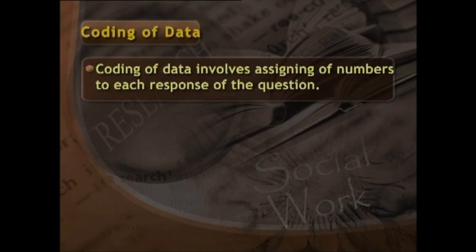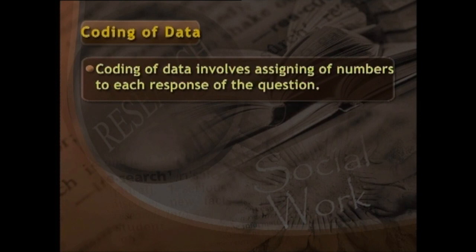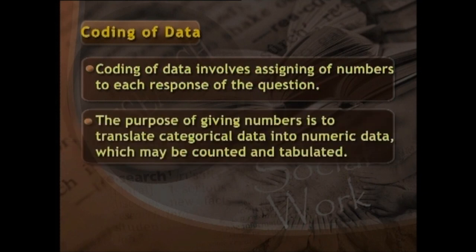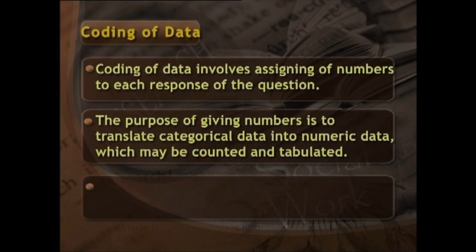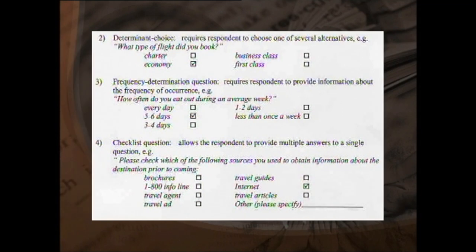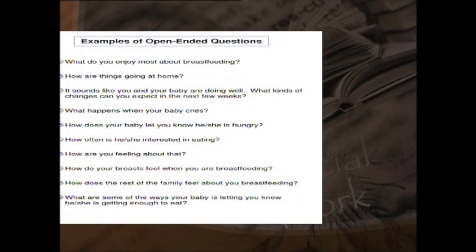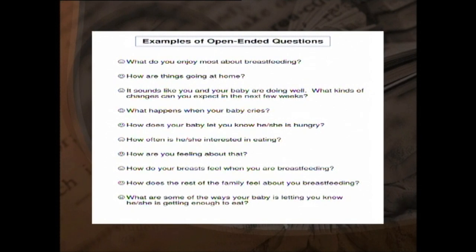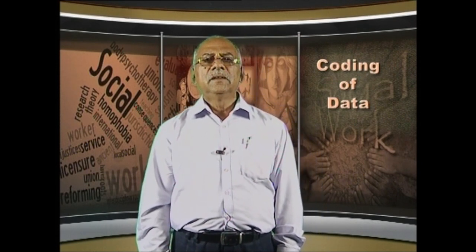Coding of data involves assigning numbers to each response of a question. The purpose of giving numbers is to translate categorical data into numeric data, which may be counted and tabulated. The task of the researcher is to give numbers to responses carefully. For example, a closed-end question may be already coded and hence it has to be just included in the code book. Coding of open-end questions involves operations such as classification of major responses and developing a response category of 'others' for responses which were not given frequently. The classification of responses is primarily based on similarities or differences among the responses.